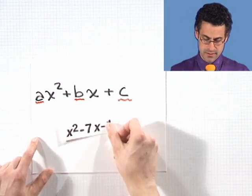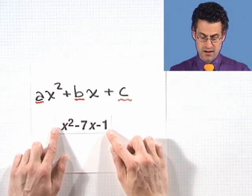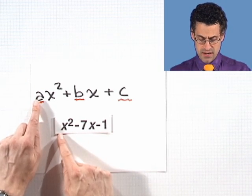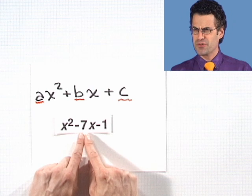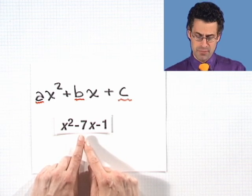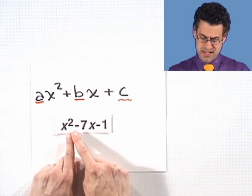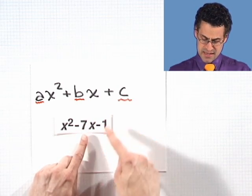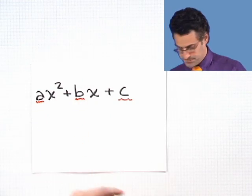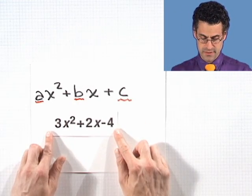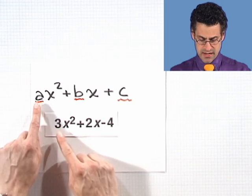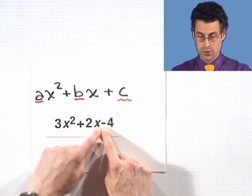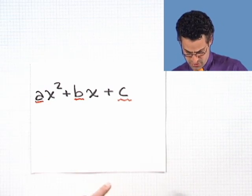Let's start off simply. Here I see there's an invisible 1 coefficient in front of the x squared, so a here is 1. Now what's the b? You might first think the b is 7, but remember that we're always running a plus sign here, so we have to view this as plus negative 7. So in fact, b here is negative 7, and c is negative 1.